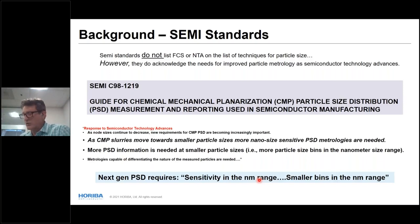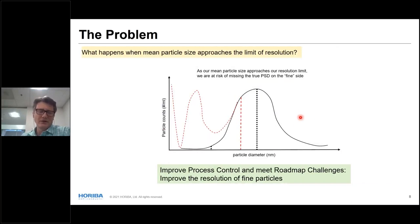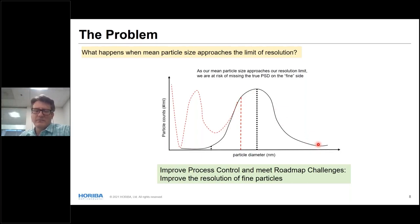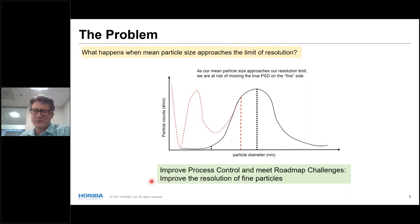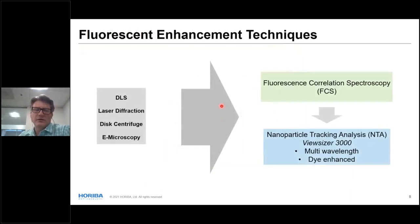Similarly, the latest semi-standards — reviewed at the American Vacuum Society CMP user group meeting in April — define standards for measuring and reporting particle size distributions. The two techniques we cover today, FCS and NTA, are not yet listed, but the standard acknowledges needs going forward: sensitivity in the nanometer range and smaller bins. When our mean particle size approaches the resolution limit, we're basically flying blind on what's happening with smaller particles. We really want to improve fine particle resolution.